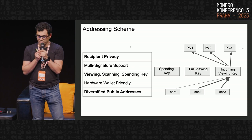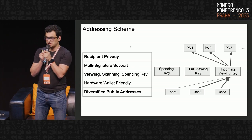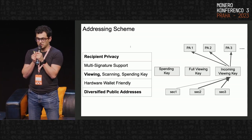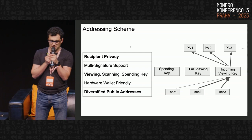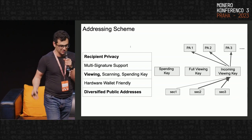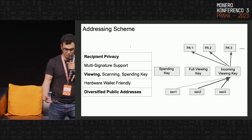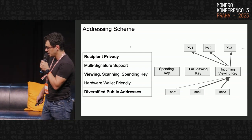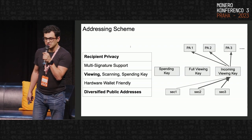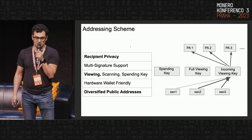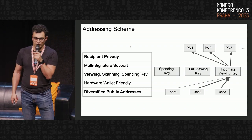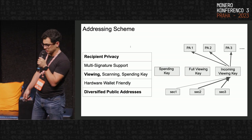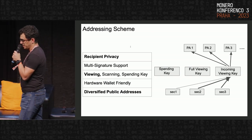The incoming viewing key allows generating diversified public addresses which can be shared with recipients in order to receive transactions. It also allows scanning the ledger and identifying all incoming transactions sent to any diversified address generated with this key.